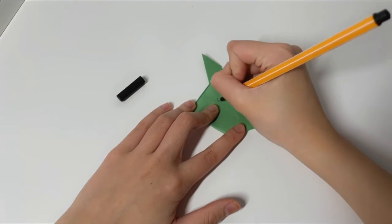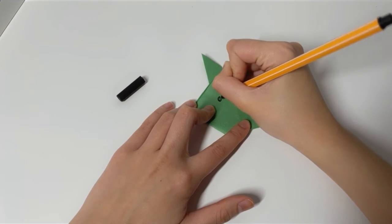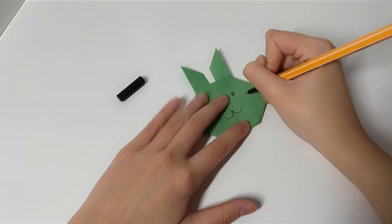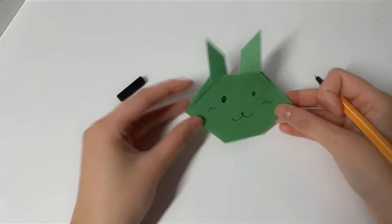Now we'll take a pen, and I'm going to draw in the little eyes of the rabbit. You can use any color, any kind of pen, or create any pattern. So just feel free to have fun with it. And this is your origami rabbit.